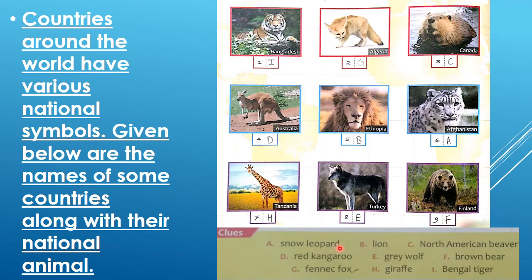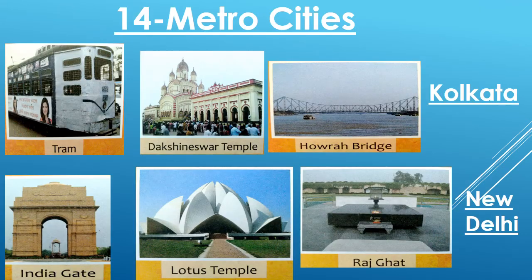This is a very simple exercise, kids — you have to complete it. Lesson number 14: Metro Cities. India is a very large country, kids. It has many famous cities — some big, some small. Our country has many cities, and among them some are metro cities.